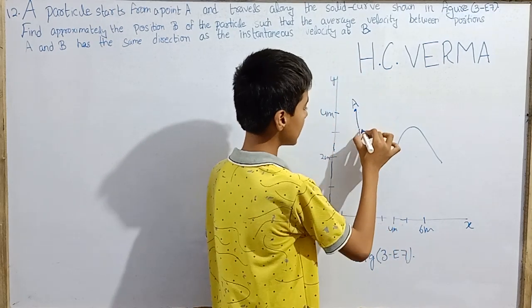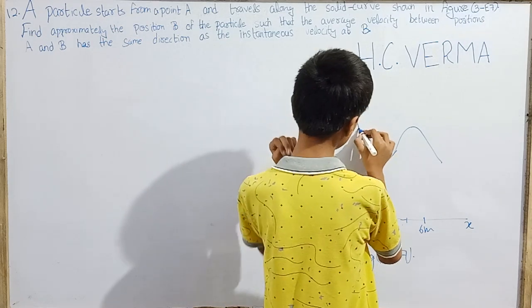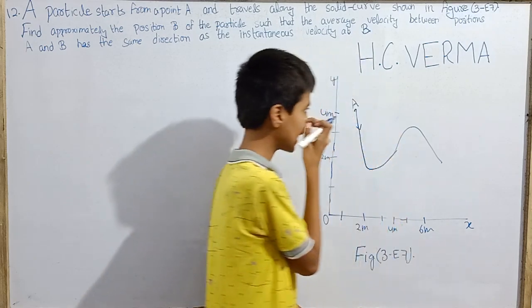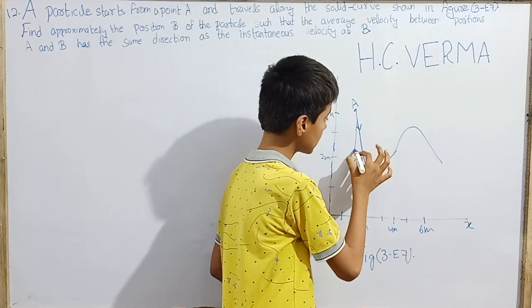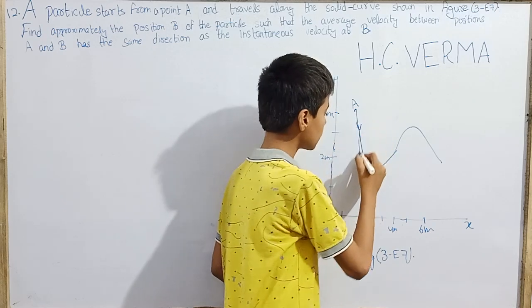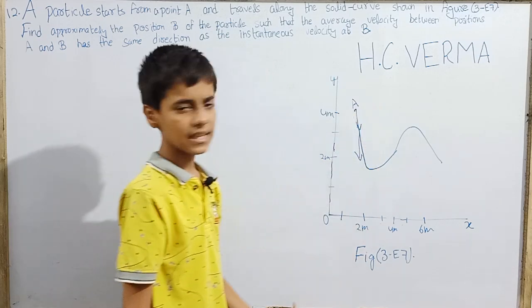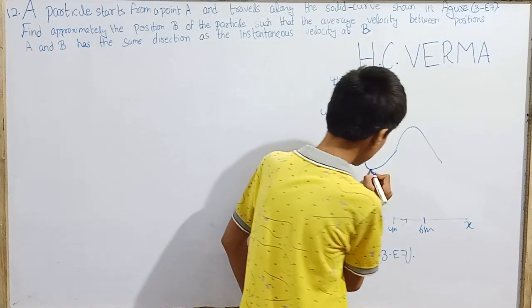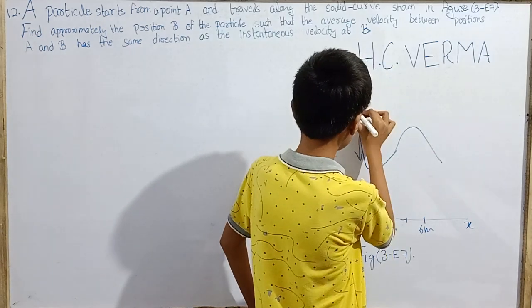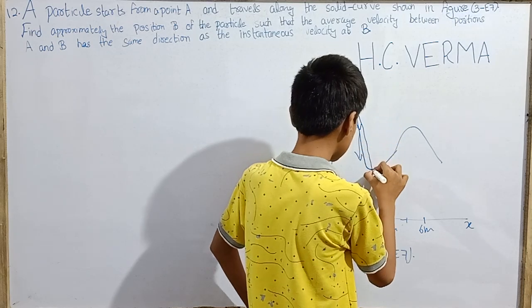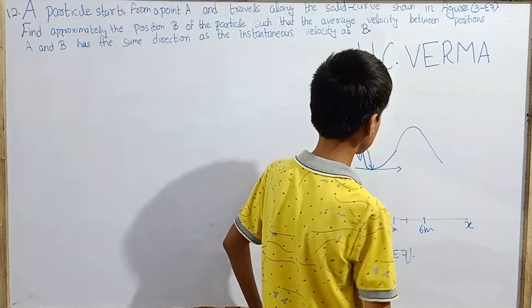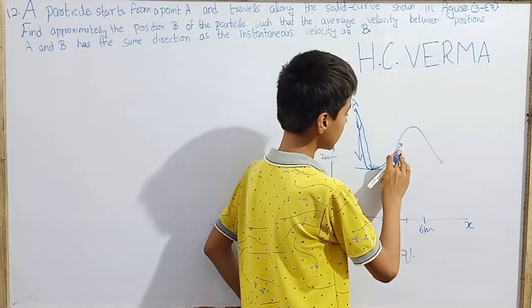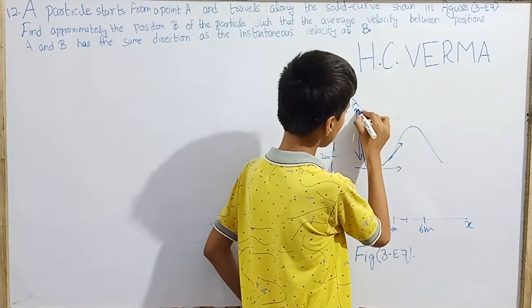Let me try placing point B here. If I suppose B is here, and the average velocity is in this direction, but the instantaneous velocity is tangent here, they don't align. This does not really seem like point B. We need something better. If I put B point here, average velocity is here but instantaneous velocity is here.